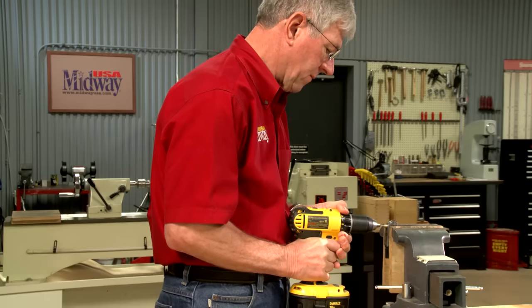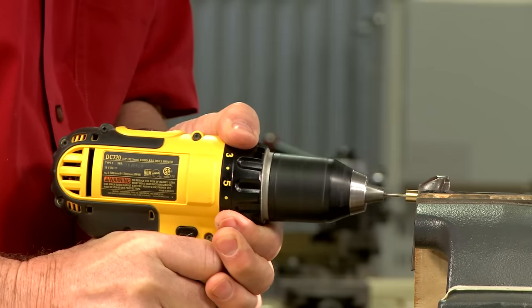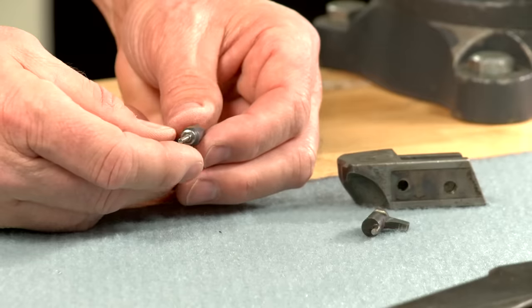Converting the breech block from rimfire to center fire involves drilling a new hole in the breech block and making a new firing pin.